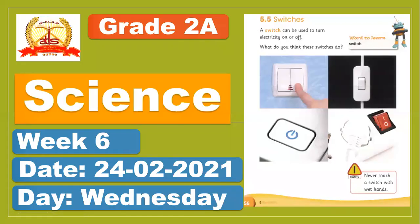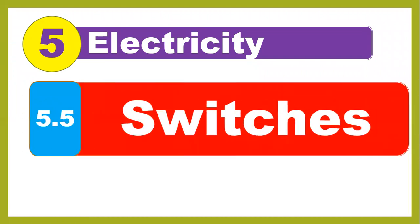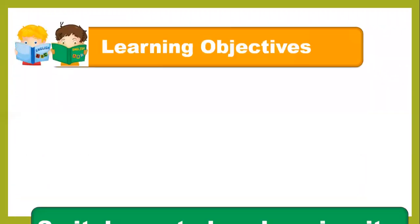Don't forget to write the date in your books. As you know, this is unit number 5: electricity. Today our topic was switches. We use switches to turn off and turn on the electricity.